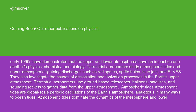Terrestrial aeronomers study atmospheric tides and upper atmospheric lightning discharges, such as red sprites, sprite halos, blue jets, and elves. They also investigate the causes of dissociation and ionization processes in the Earth's upper atmosphere. Terrestrial aeronomers use ground-based telescopes, balloons, satellites, and sounding rockets to gather data from the upper atmosphere.